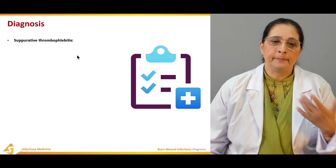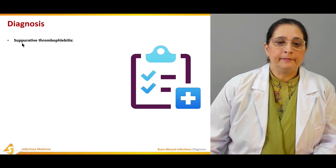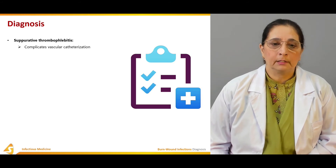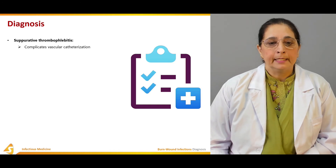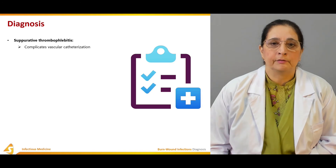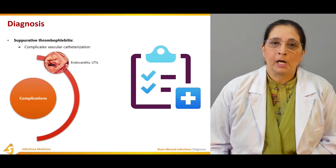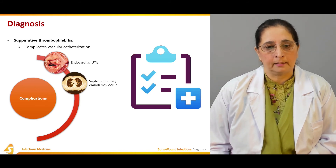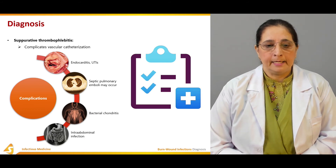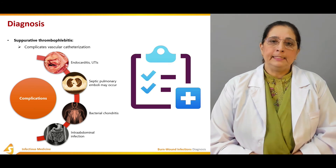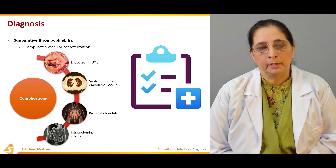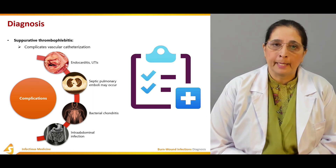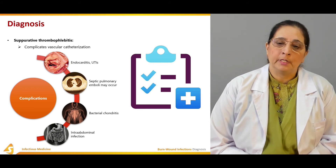Other complications of burn wound infections include suppurative thrombophlebitis — inflammation of the veins — which can complicate vascular catheterization. Additional complications are endocarditis, urinary tract infection, septic pulmonary emboli, bacterial chondritis — inflammation of the cartilage — and intra-abdominal infection. All of these can occur as a result of burn wound infections.